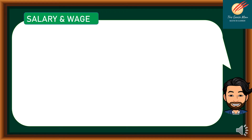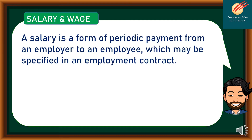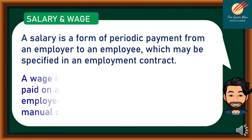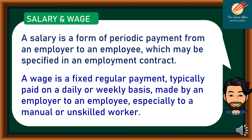If we define salary, it is a form of periodic payment from an employer to an employee, which may be specified in an employment contract. On the other hand, a wage is a fixed regular payment, typically paid on a daily or weekly basis, made by an employer to an employee, especially to a manual or unskilled worker.